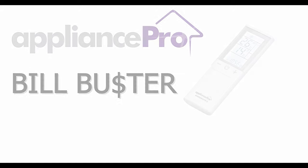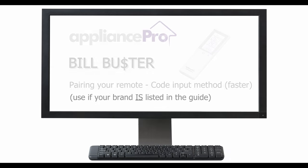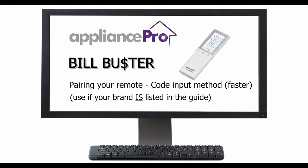If you are having trouble stopping the code sequence before it progresses to the next number, try letting it run through the codes uninterrupted and write down the code each time your heat pump turns on or off. Then test each of these codes using our code input method covered in a separate guide.